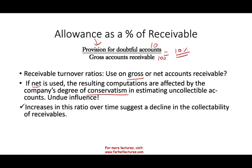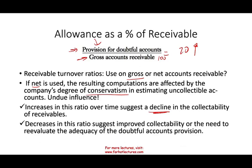If this ratio is increasing — say from 5% to 20% — it indicates a decline in the collectibility of receivables, meaning your provision is getting larger and larger. Conversely, a decrease — from 10% to 5% — suggests an improvement in collectibility, or it may indicate the need to re-evaluate the adequacy of the doubtful account estimate. Those are important indications to watch.